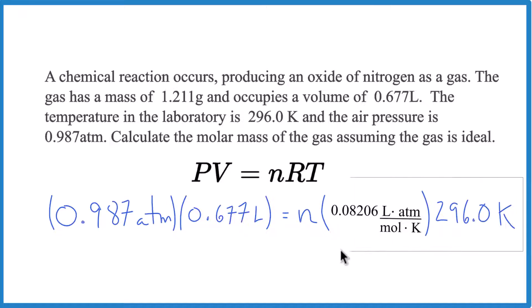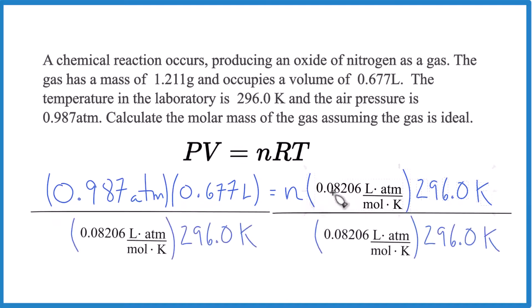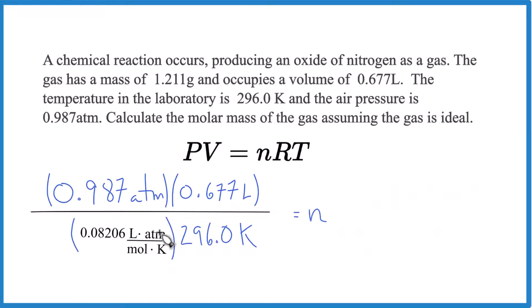So I'm going to divide both sides by this here, and then all of this, that cancels out. So let's just get rid of that. Now we have atmospheres here and here, liters, liters, and then Kelvin here and here. You can see we're going to end up with moles.